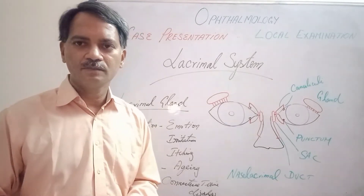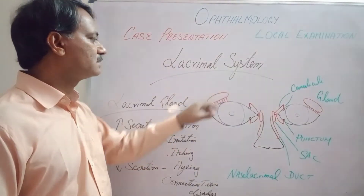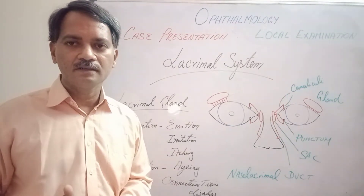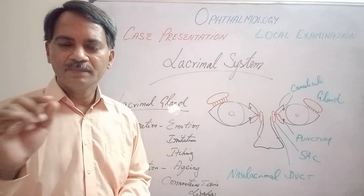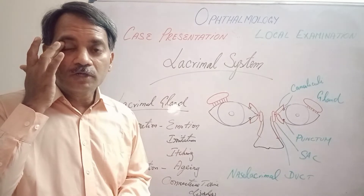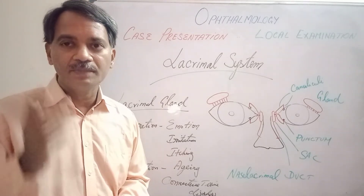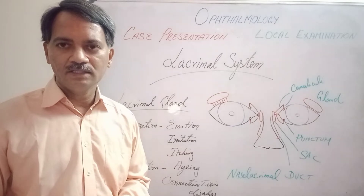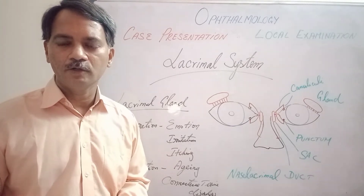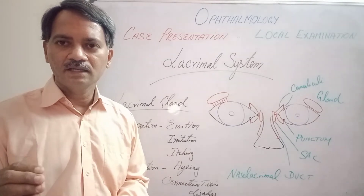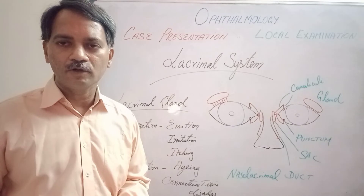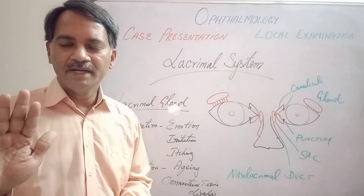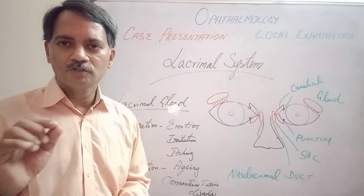Now let us see the abnormalities of the lacrimal secretory system. The major lacrimal gland is situated below the roof of the orbit on the temporal side. To examine it, palpate supra-temporal to the eyeball just below the superior orbital margin, and look for any mass or swelling. If swelling is present, evaluate the cause. A swollen lacrimal gland will push the eyeball down and inward, causing displacement of the eyeball.